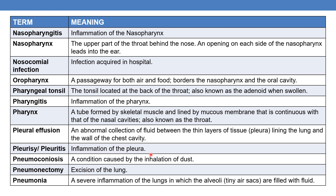Pneumoconiosis is a condition caused by the inhalation of dust. Pneumonectomy — where pneumon means lung and ectomy means surgical removal — is excision of the lung. Pneumonia is a severe inflammation of the lungs in which the alveoli are filled with fluid. Alveoli are also called air sacs.